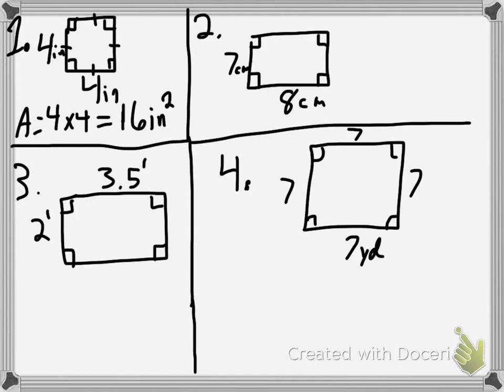Okay, so number 2, it's 7 times 8. 7 times 8 is 56, and it is centimeters squared.